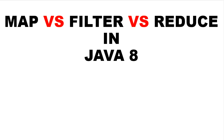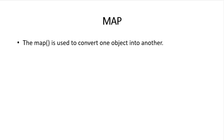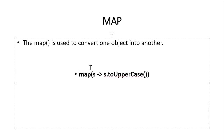In our previous video we discussed streams and how to create sequential or parallel streams. Once you have a stream object you can perform any methods on it like map, reduce, or filter. Let's start with the first method: map. In simple words, the map method is used to transform one object into another by applying a function.